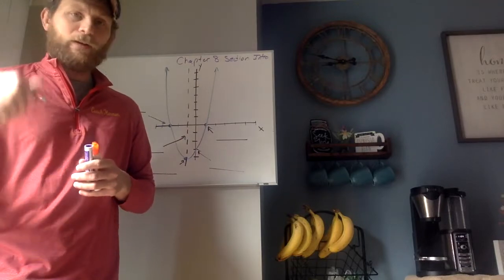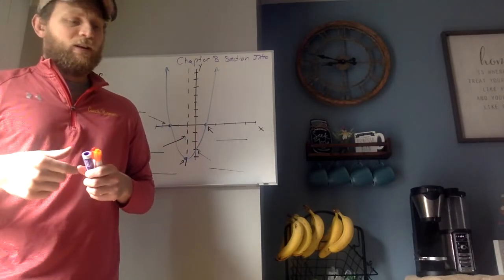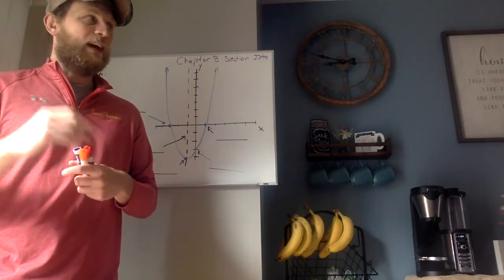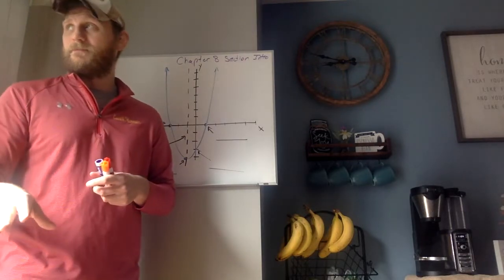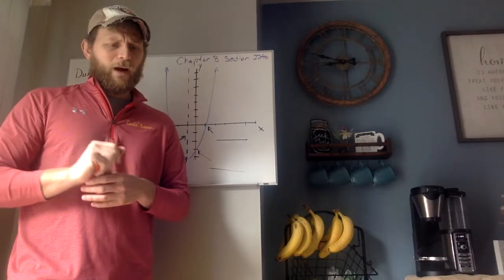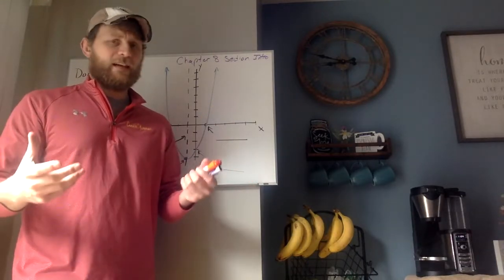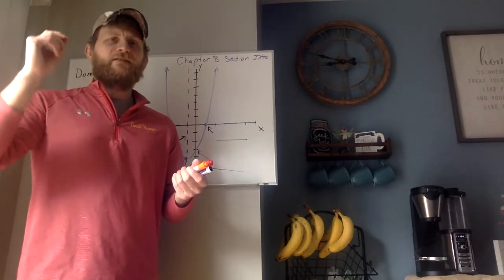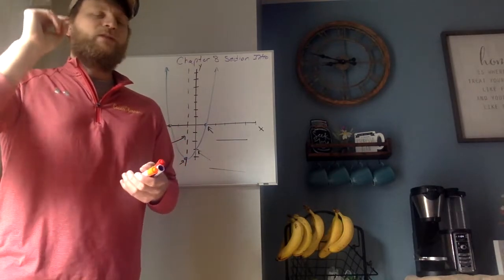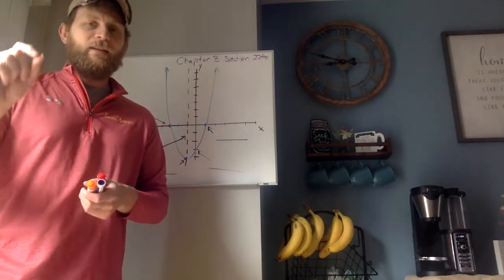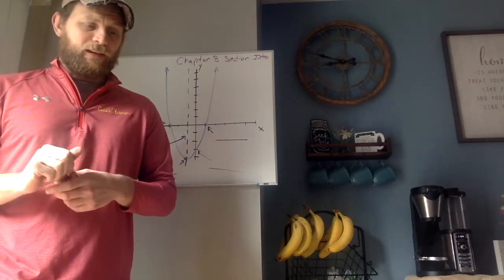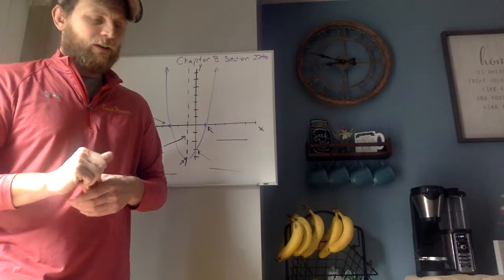A couple of different names for the x-intercept: roots, zeros, solutions — things like that. Now a y-intercept is where your graph crosses the y-axis, and what you need to know is that x is zero at that point.